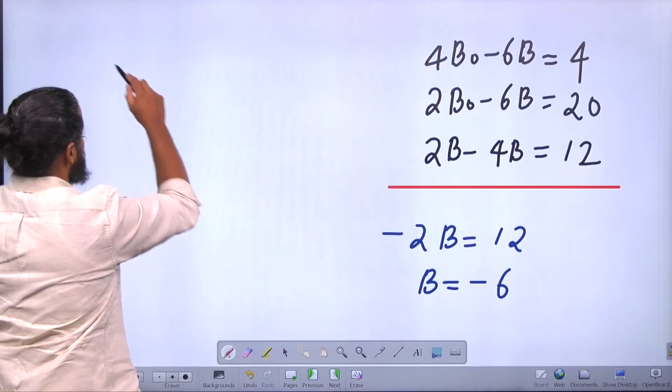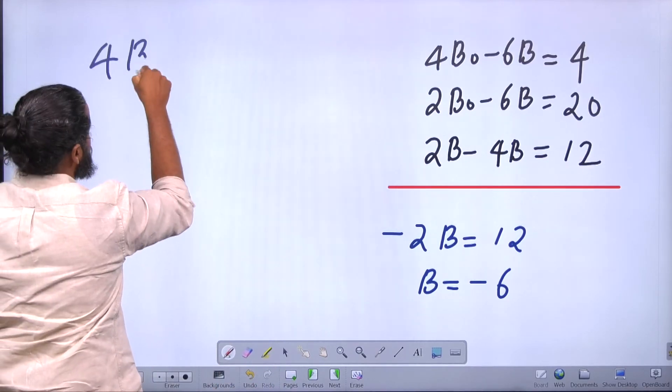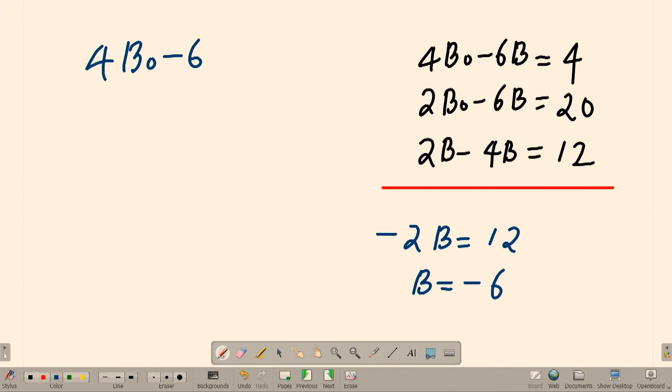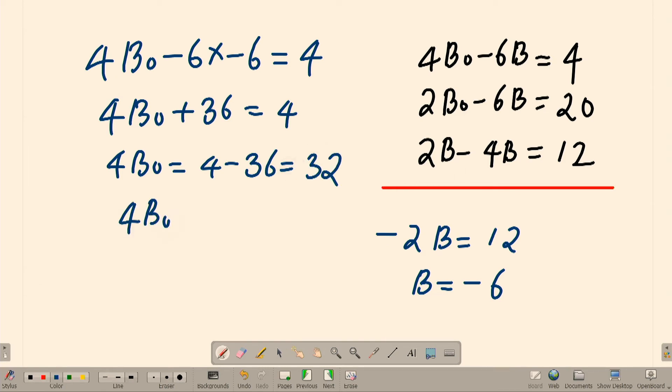Substitute that value in the first equation. You can see that 4B₀ - 6 multiplied by the value of B, -6, is going to give you 4. That means 4B₀ + 36 is going to be 4, and we can say 4B₀ is going to be equal to 4 - 36, which is equal to -32. We can say 4B₀ is equal to -32, or B₀ is equal to 8 units.